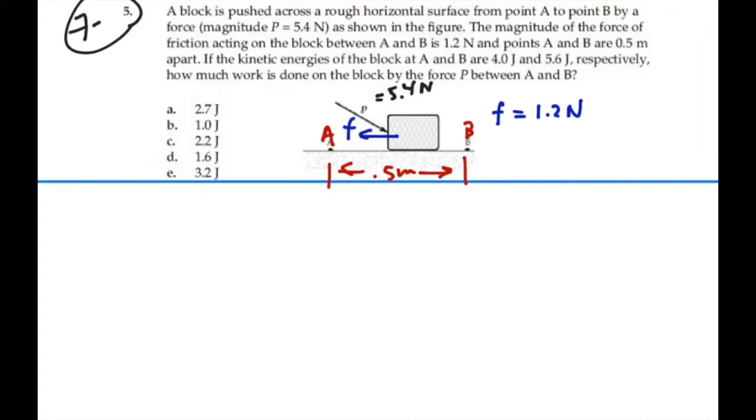So, we also know the kinetic energy at A is 4 joules, and the kinetic energy at B is 5.6 joules. I think the best way to start this problem is our one equation to rule them all and just see what we have.